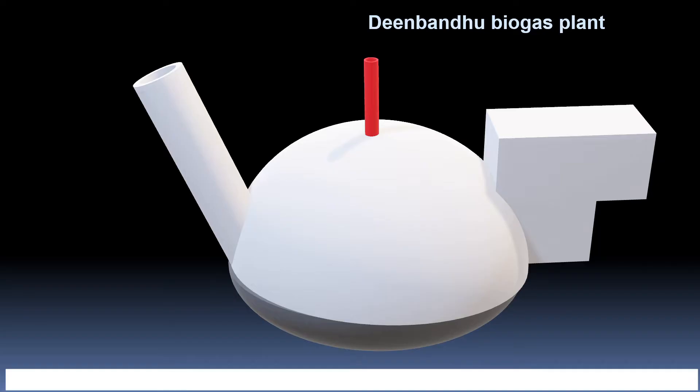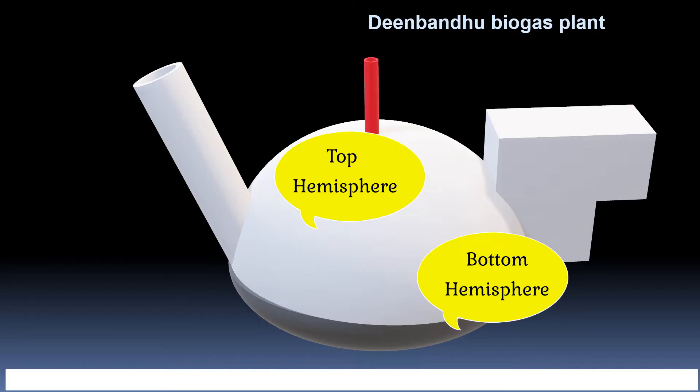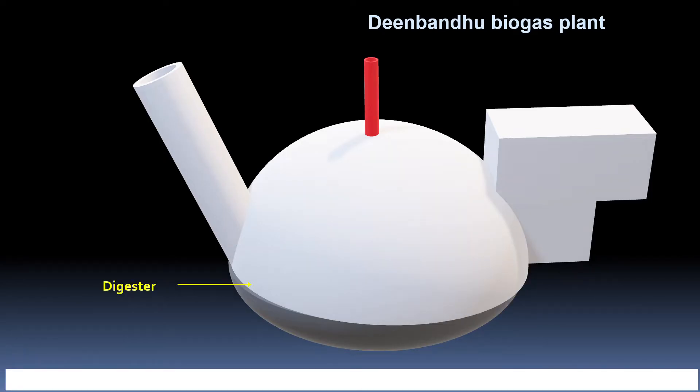Deenbandhu biogas plant consists of 2 hemispheres - this is the top hemisphere and this one bottom hemisphere. The bottom hemisphere and lower part of the top hemisphere is called digester. The upper part of top hemisphere is used as gas holder.